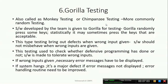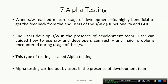Next topic is Alpha Testing. When the software reaches a major stage of development — meaning partially completed — it is highly beneficial to get feedback from end users. Once your application is almost ready, you should take feedback from end users on functionality and GUI.